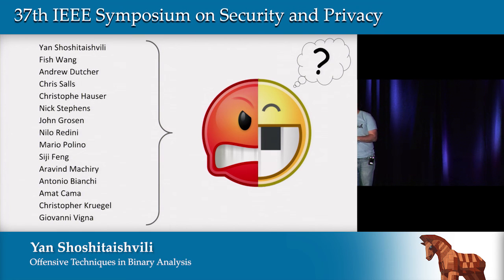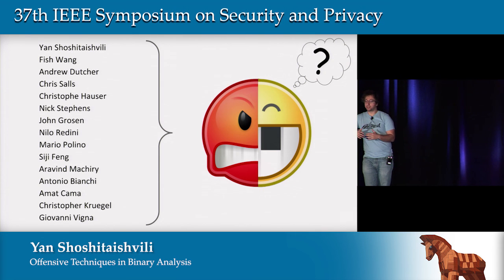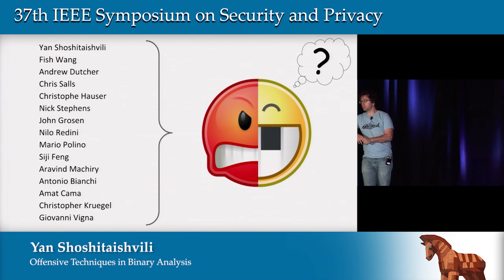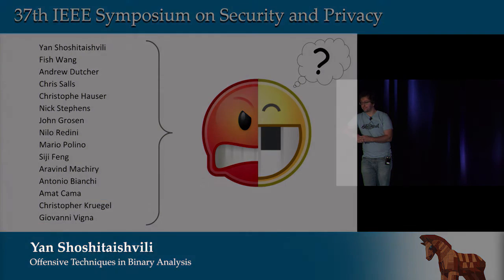We've done a lot of applications of angr in research on what we feel should be solvable with these techniques, but also in the CGC and in capture the flag competitions. Last weekend at DEFCON, angr got first blood on the top reversing challenge — against human hackers. We feel our results make sense. When we see a path explosion, we look into it, and it checks out. When something doesn't find a crash, we look into the binary and see that from a theoretical perspective this would overwhelm this analysis. We do what we can with the openness that is available.